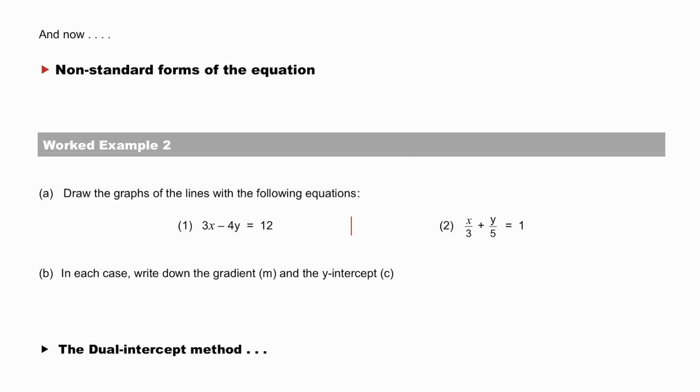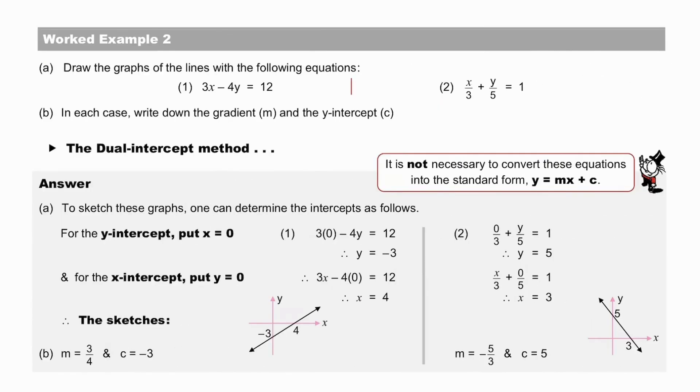And now, non-standard forms of the equation in worked example 2. How about the dual intercept method? Pause to check your solutions. Again, it is not necessary to convert these equations into standard form y equals mx plus c. The dual intercept method works perfectly. Again, to find the y-intercept, we put x equal to 0 in both equations. And to find the x-intercept, we put y equal to 0, and this is true of both examples. Now pause to check your method in these examples.